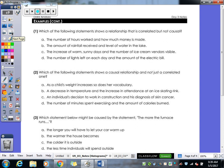So, which of the following statements shows a relationship that is correlated but not causal? So, we're looking for correlated, not causal. The number of hours worked and how much money is made. Well, those are definitely correlated and let's think about it. Is it causal? Is me working more hours giving me more money? Yes. And then me working less hours, does that give me less money? Yes. So, that one is causal. So, that's not the one we're looking for. We're looking for one that's not causal. The amount of rainfall received and the level of water in the lake. Well, if we get more rainfall, what happens to our water level? It goes up. What if we get like no rainfall? It goes down. So, is that causal? Yeah, that's going to be a causal. The increase of warm sunny days and the number of ice cream vendors visible. No. It's correlated. They do generally happen together. But, the warm sunny day does not cause the ice cream vendors to go outside.